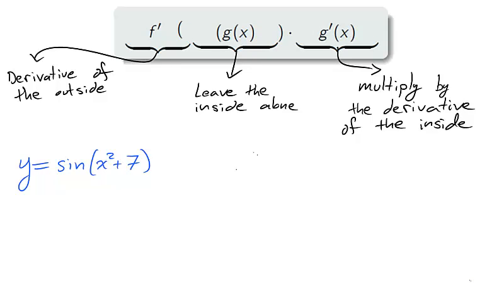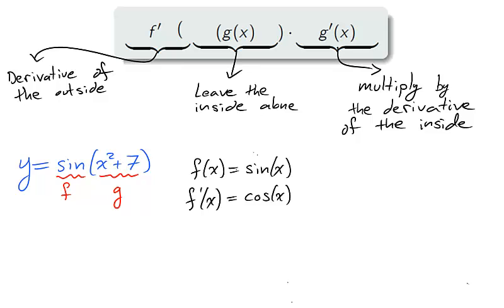Let's take the derivative of a function that I promised to derive back in section 2.3. Identify the composition. The outside is f and the inside is g. The derivative of sine x is cosine x, and the derivative of x squared plus 7 is 2x.